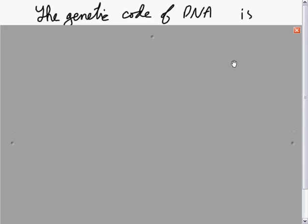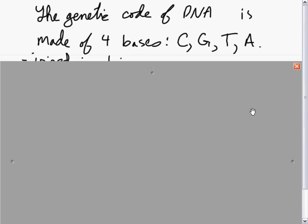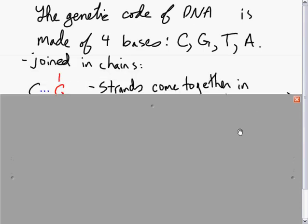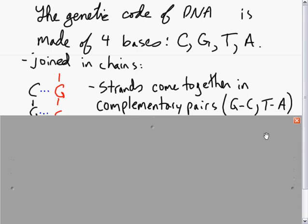The genetic code of DNA is made of four bases: C, G, T, and A. It is joined in chains.